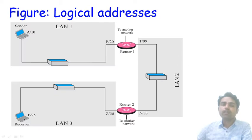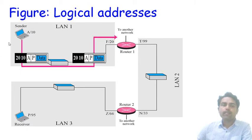In another example, the sender has logical address A and physical address 10, while the receiver has logical address P and physical destination address 95. Data is sent from logical address A to logical address P. When data passes from the network layer to the data link and physical layer, the destination of the next router (20) and the sender's physical address (10) are added. A is the logical address of the sender, P is the logical address of the receiver, and the data moves from LAN1 to router R1.